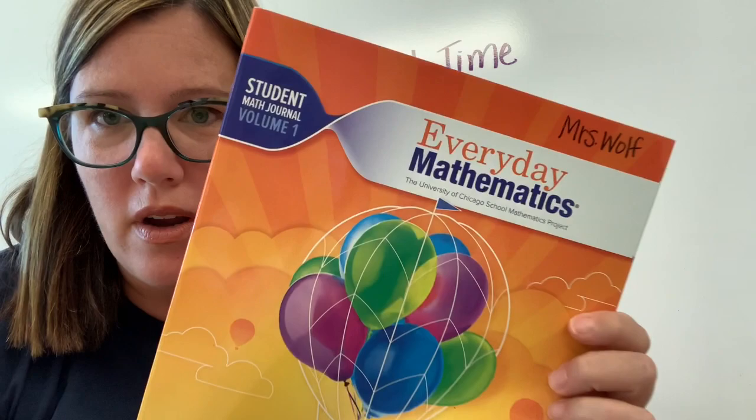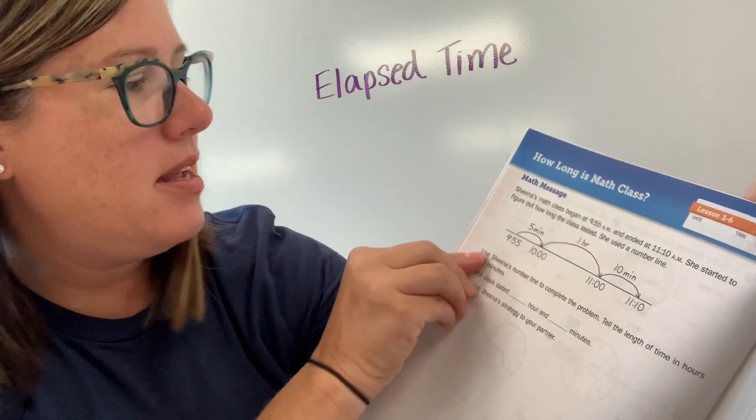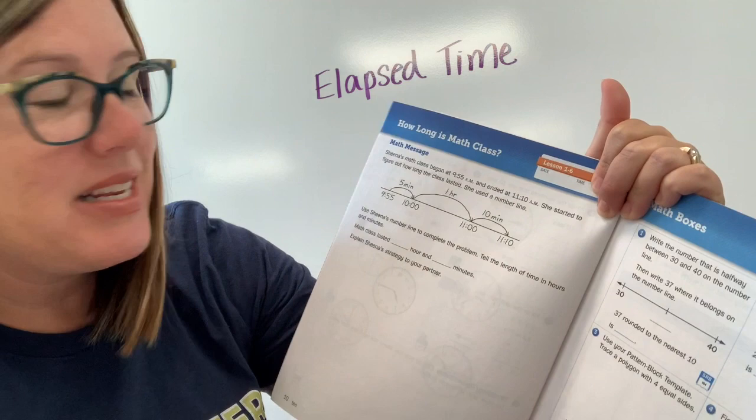To practice some elapsed time I want you to find your student workbook. We're in volume one. I want you to turn to page 10. On page 10 there is a problem. It says Sheena's math class begins at 9:55 a.m. and ends at 11:10.